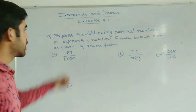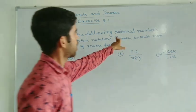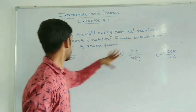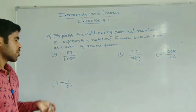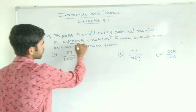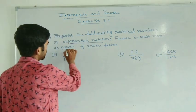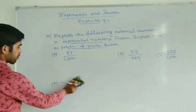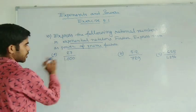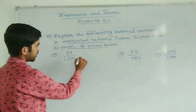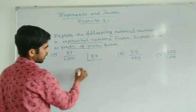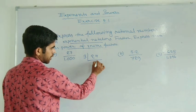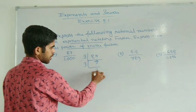Now see question number 10: express the following rational numbers in exponential notation, then further express them in powers of prime factors. So you factorize the numerators and denominators. Here we have 27 — first we factorize 27 into prime factors.